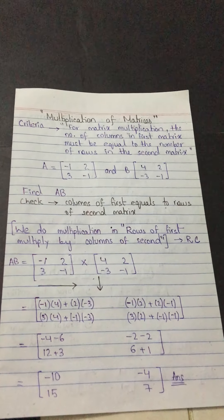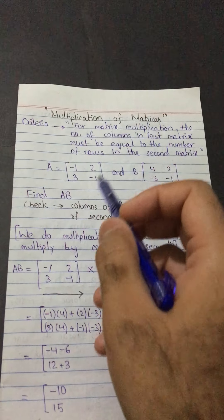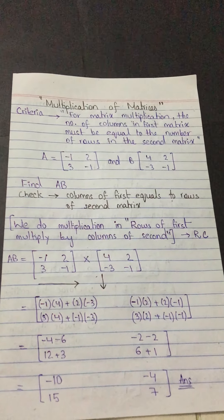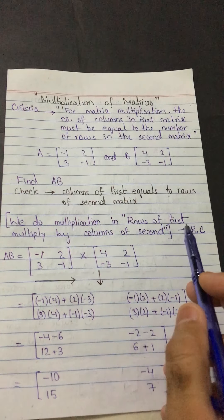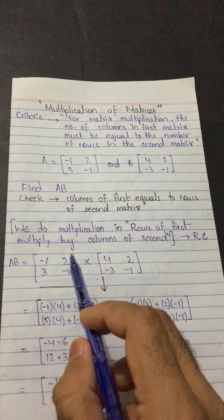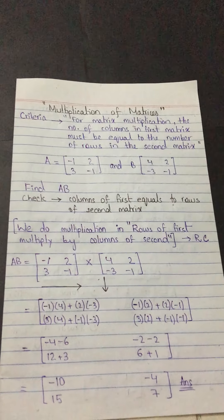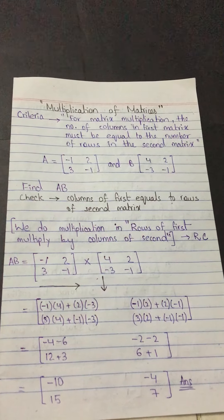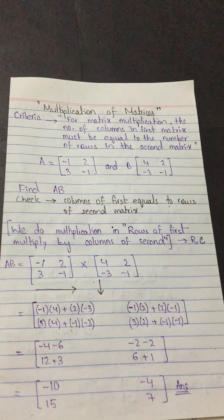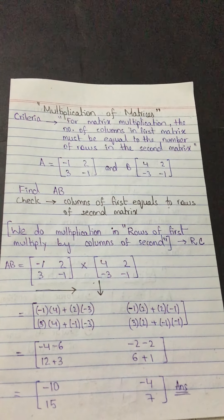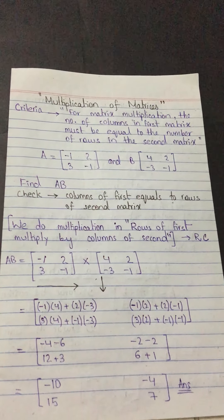The trick is: whenever we do multiplication, we go in rows and columns — rows of the first multiplied by columns of the second, remembered by RC. Make sure you check the criteria first: columns of the first must equal rows of the second. If fulfilled, go for multiplication using RC — first row first column, first row second column, second row first column, second row second column. I hope this is clear after watching this video; if not, write in the comment box and we can make another video on this topic.